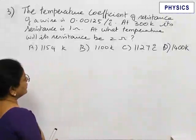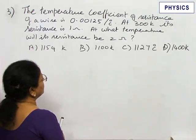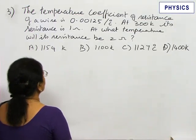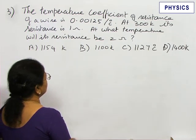Problem number 3: The temperature coefficient of resistance of a wire is 0.00125 per degree Celsius. At 300 Kelvin, its resistance is 1 ohm. At what temperature will the resistance be 2 ohms?